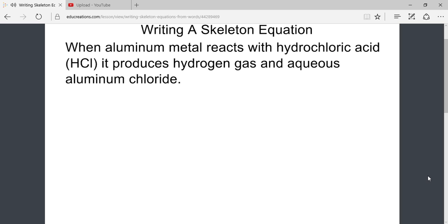Looking for the keywords, we can separate the reactants from the products. We see the term reacts tells us that aluminum metal and hydrochloric acid are our reactants. And the term produces tells us hydrogen gas and aqueous aluminum chloride are our products.